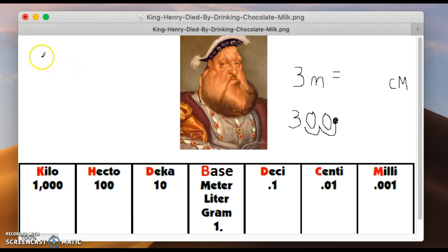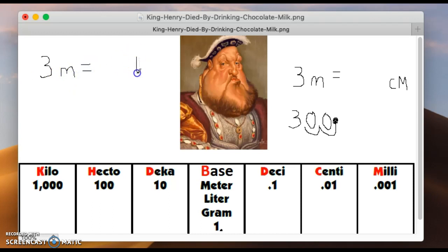Let's take another example. Suppose we want to take three meters and convert it to kilometers. How many jumps would that be and in what direction? Well, it's one, two, three jumps to the left.